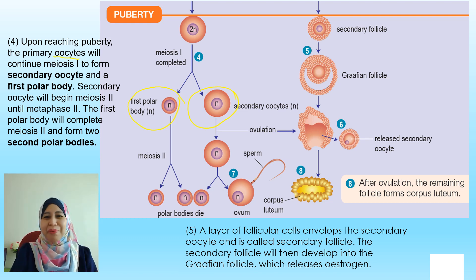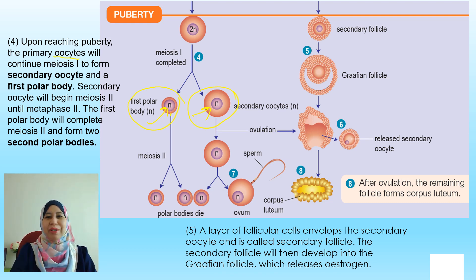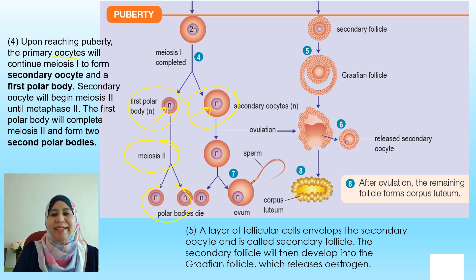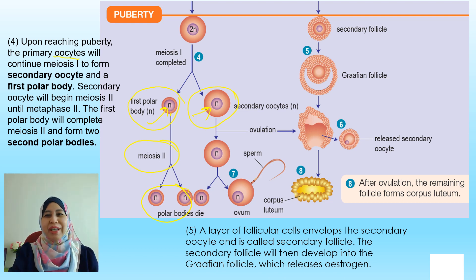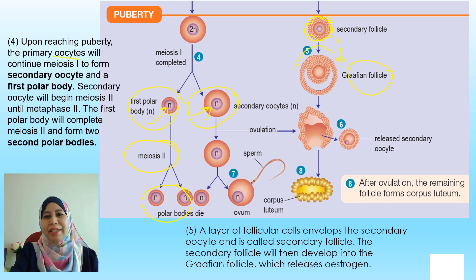Remember, this is a meiosis process, so the secondary oocyte is haploid and the first polar body is also haploid. The secondary oocyte will continue with meiosis 2. Looking closely at the secondary oocyte, it is surrounded by follicles. This secondary follicle will grow to form the graafian follicle.